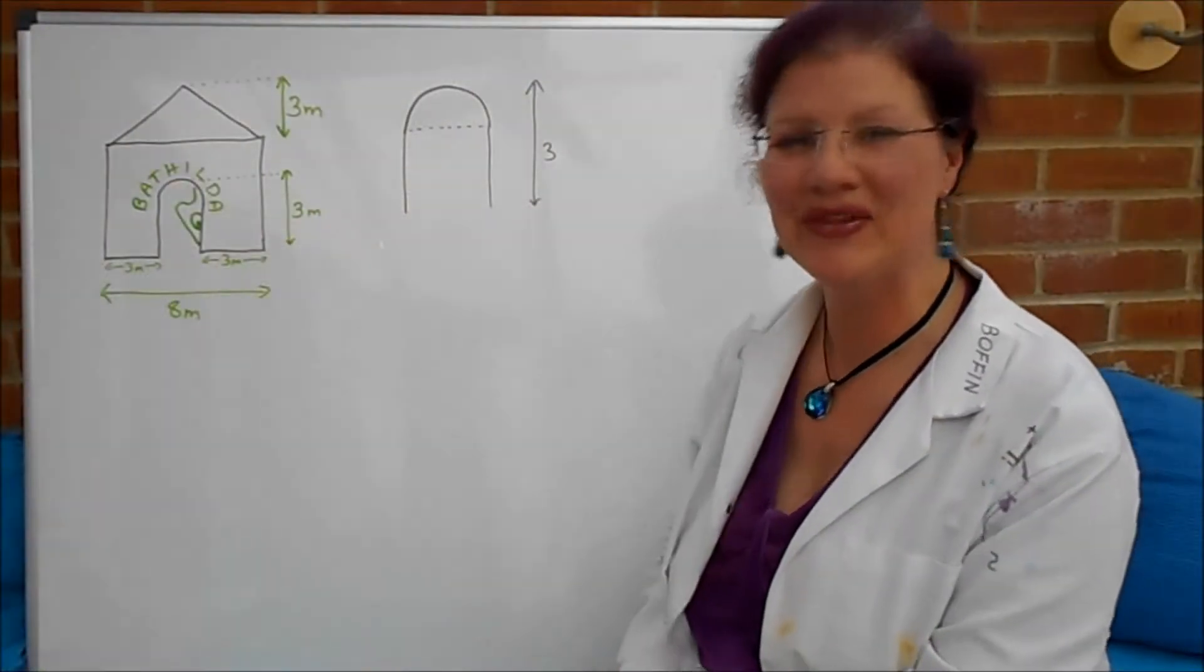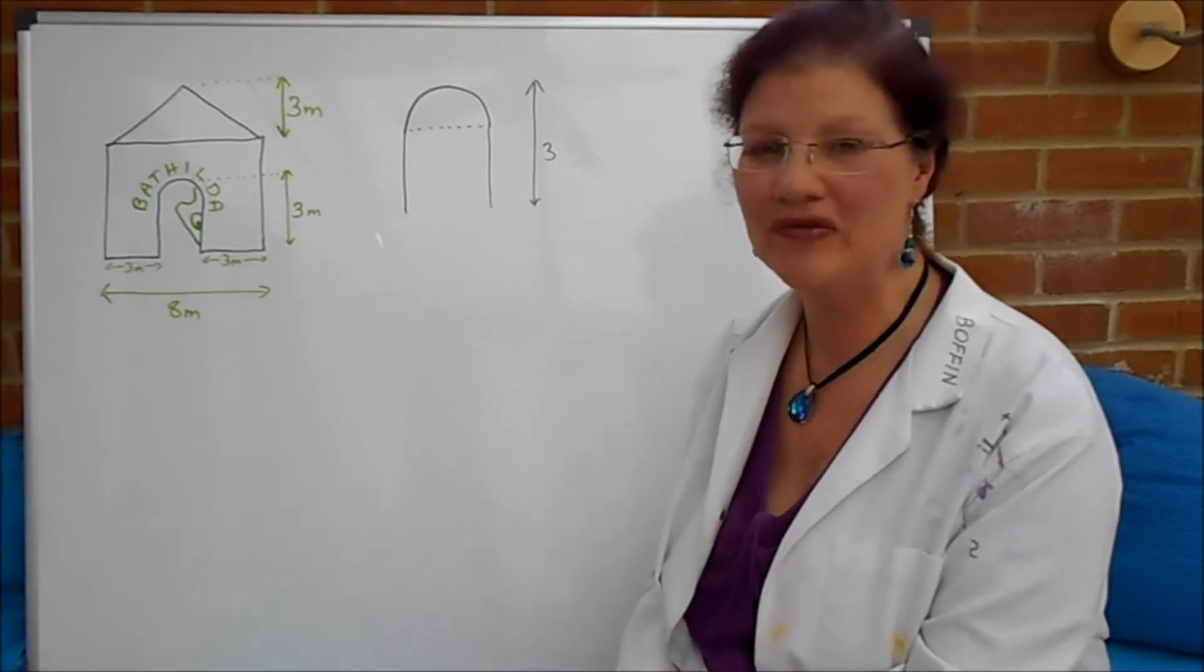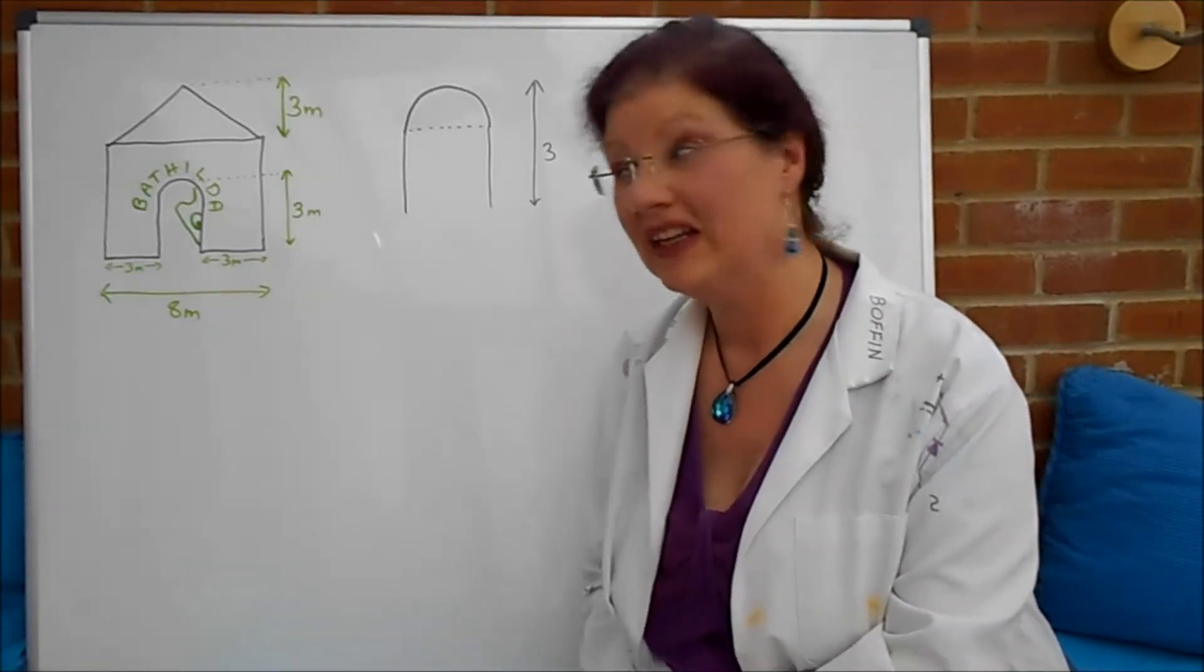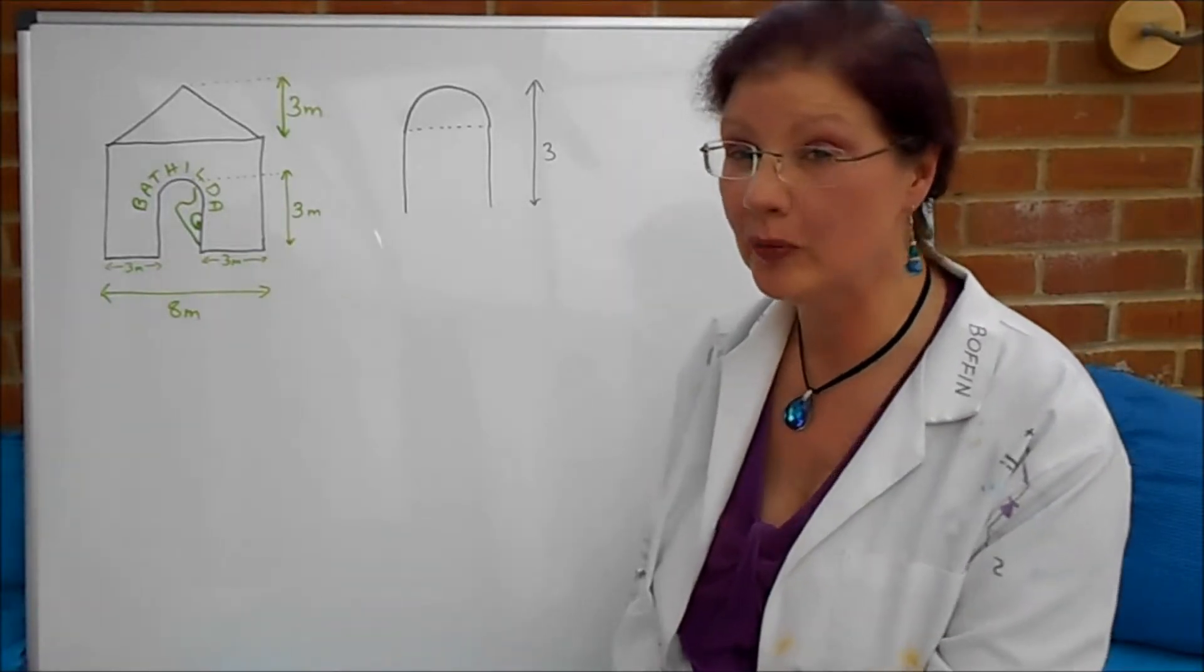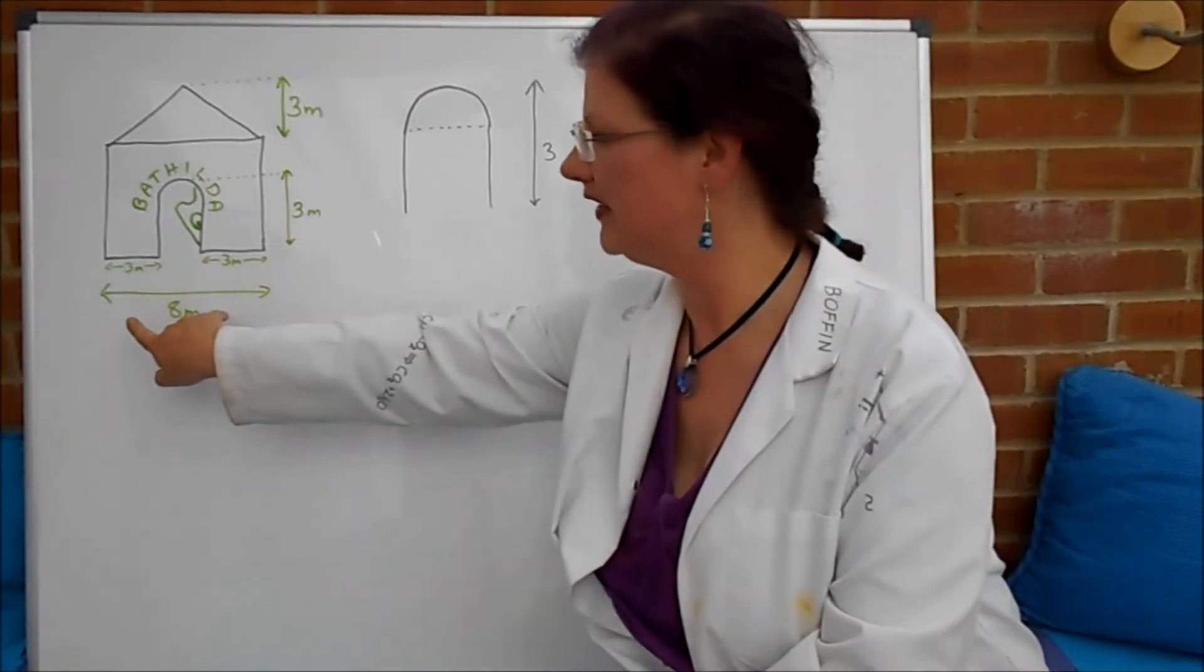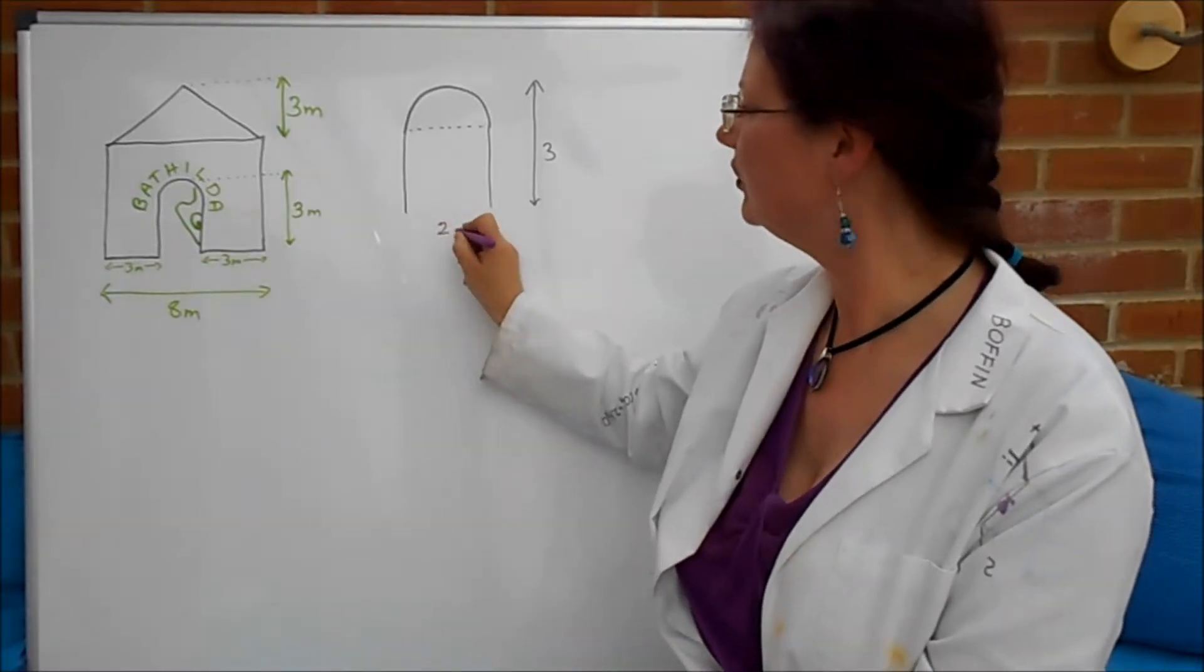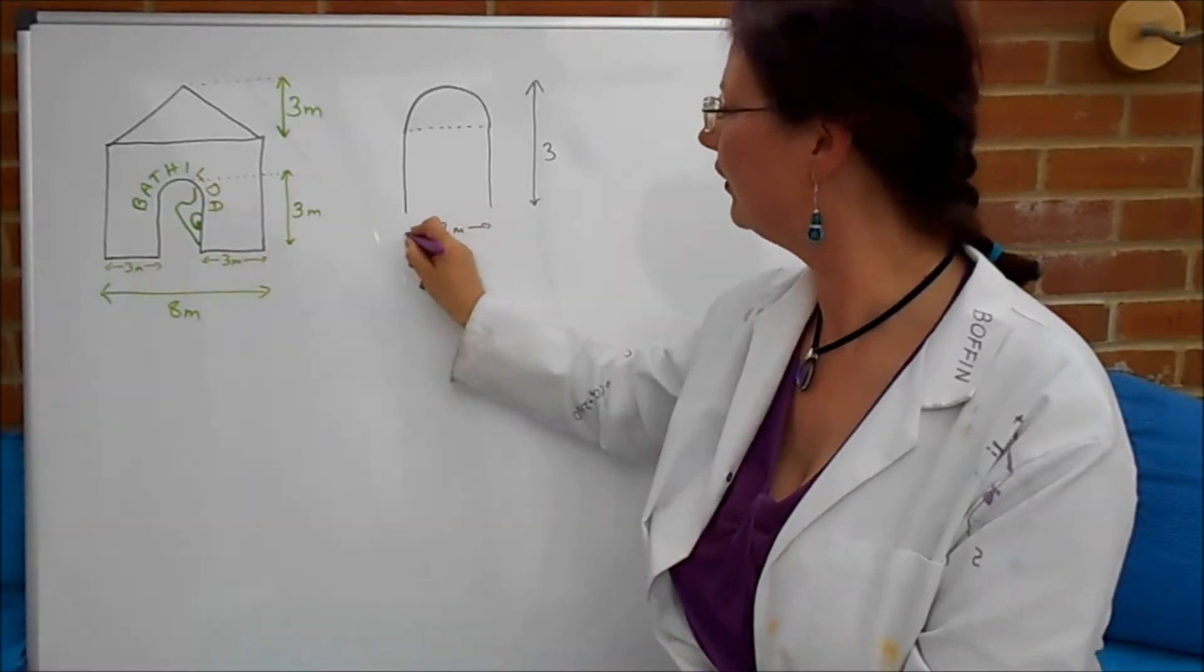I've drawn out the doorway here as the two straight sides and a half circle on the top and the total overall height is three meters. Now that's not very much information to go on just at the moment but we can get some more. The width of the doorway, when we take the eight, take away those threes on either side, gives us two meters for the width of the doorway.